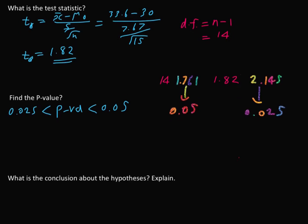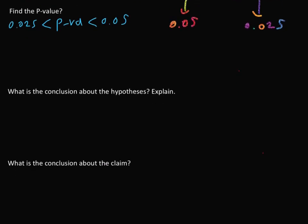Then what is the conclusion about the hypothesis? How do we find the conclusion? We know if p-value less than or equal to alpha, we reject H0. So let me check this. Now we know the p-value should be in between 0.025 and 0.05, so maybe somewhere here. We don't know the exact p-value, but now alpha equals 0.05.